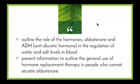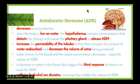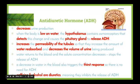The two hormones we'll be looking at are aldosterone and antidiuretic hormone. Antidiuretic hormone's job is to decrease urine output. When the body is low on water, the hypothalamus — a tiny section of the brain — contains osmoreceptors that detect changes and cause the pituitary gland to release antidiuretic hormone, or ADH.